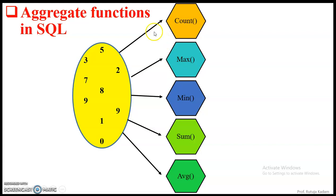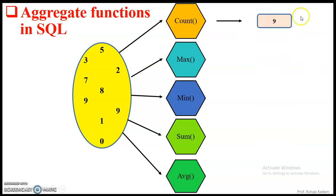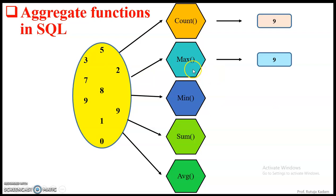Now in our day-to-day life, if we consider this example, these are nothing but a set of values. If we operate these aggregate functions, how it will produce the output. These values are in total nine values. The COUNT function will return nine, which means there are total nine values in the set. Then comes the maximum function — out of these values, nine is the maximum value, so the MAX function will return nine.